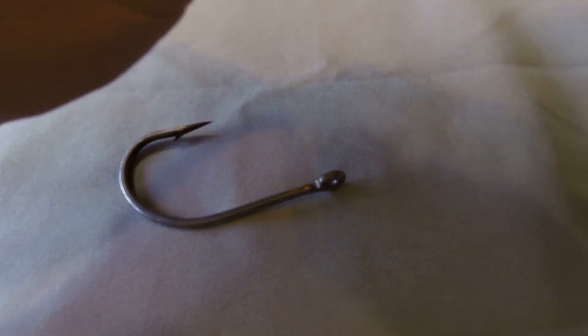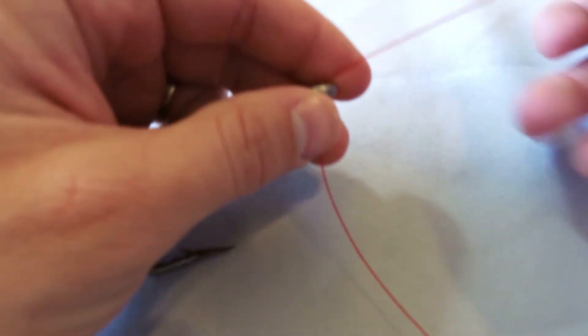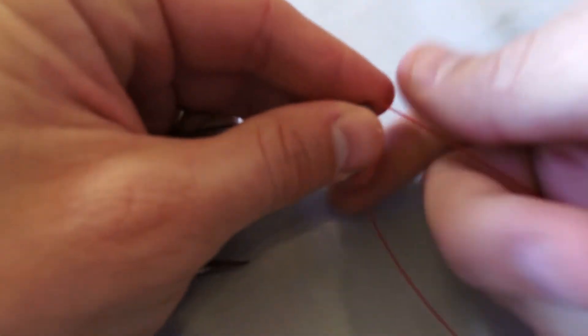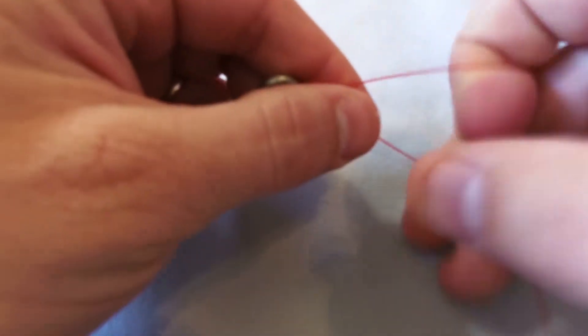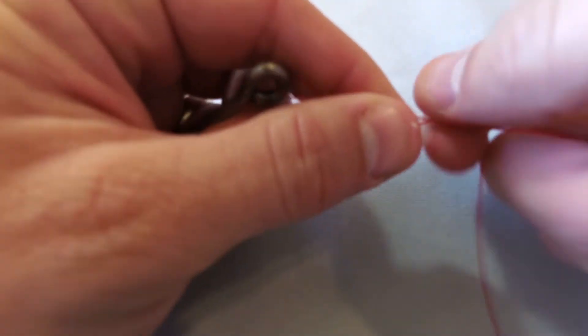Alright, so for the improved clinch knot, what you're going to do, you're going to take your line, you're going to feed it through the eye of the hook. Give yourself about six inches, and then you're going to make some twists around your main line with that tag.